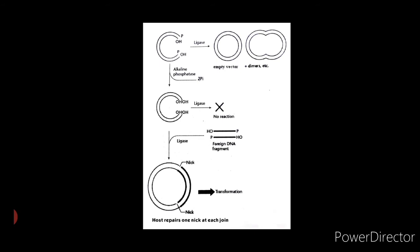Second, by treating linearized plasmid vector DNA with alkaline phosphatase to remove five prime terminal phosphate groups, both recircularization and plasmid dimer formation are prevented. In this case, circularization of the vector can occur only by insertion of non-phosphatase treated foreign DNA, which provides one five prime terminal phosphate at each join.